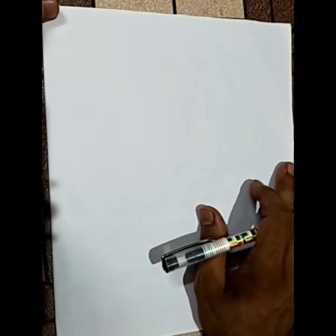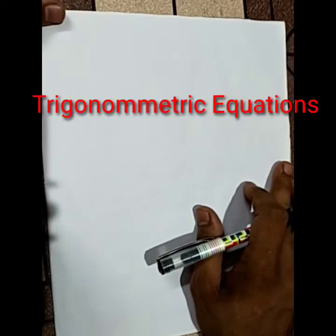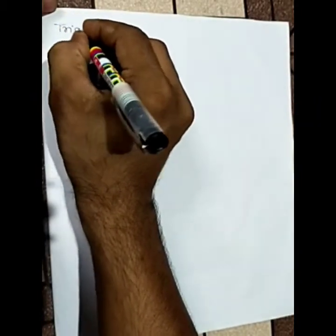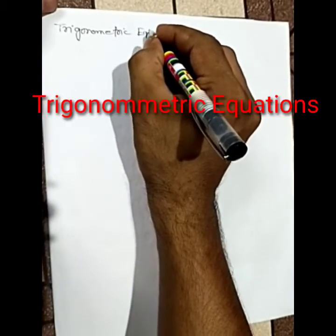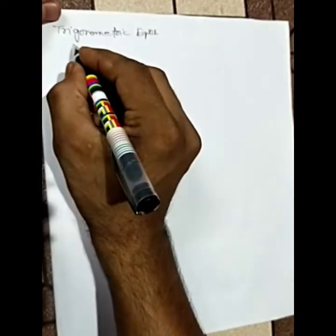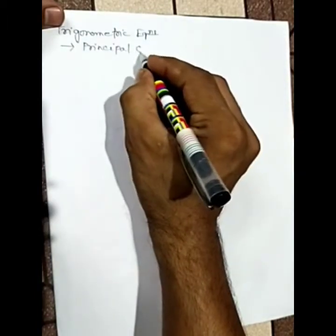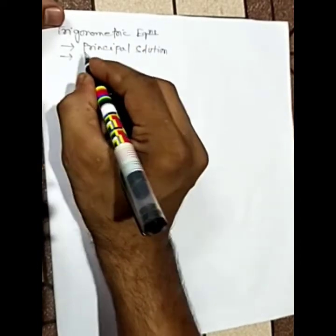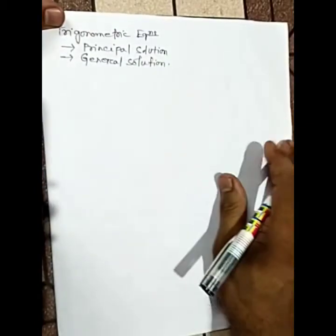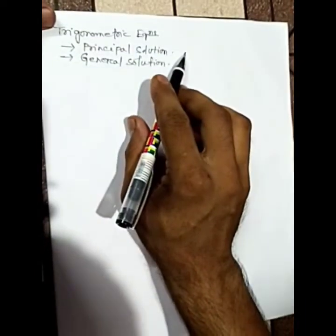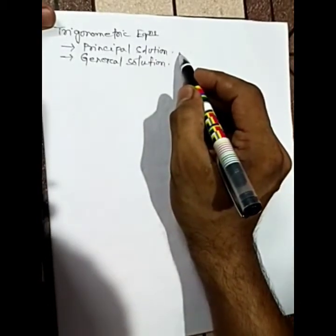Today we will study trigonometric equations. Here you will get two words: principal solution and general solution. The principal solution may be of two types, meaning you will get two principal solutions.